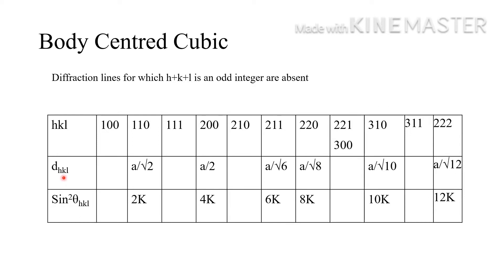The d_hkl values for BCC are: a/√2, a/√4, a/√6, a/√8, a/√10, a/√12. The sin² theta values are: 2K, 4K, 6K, 8K, 10K, 12K — meaning the values are multiples of 2K with a constant difference of 2K.